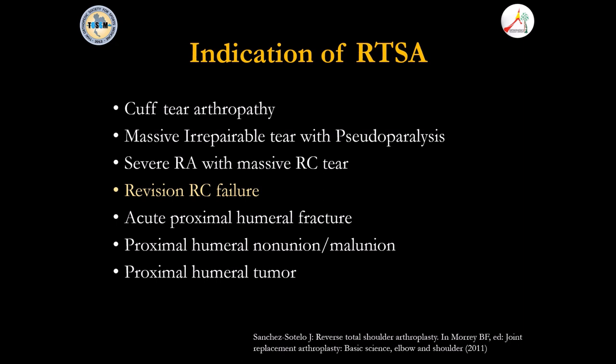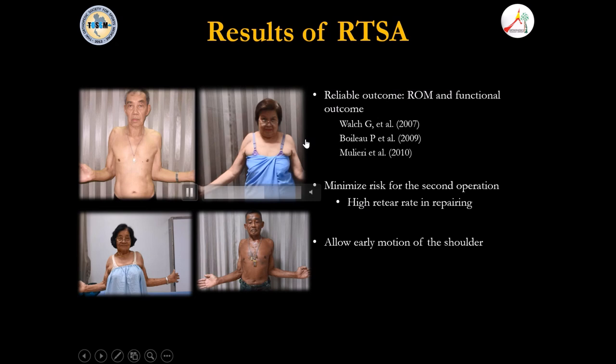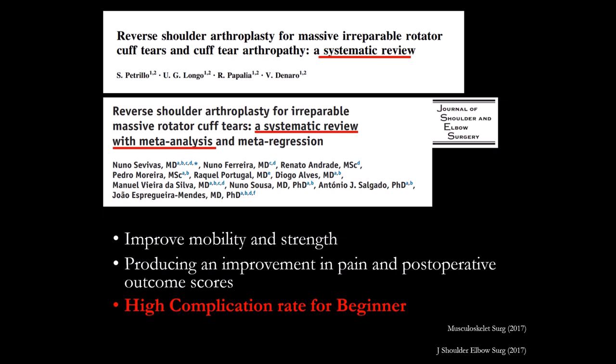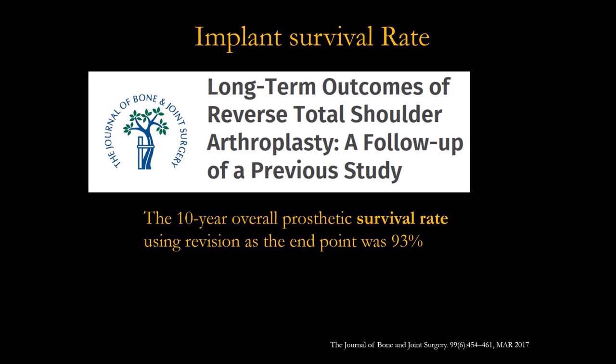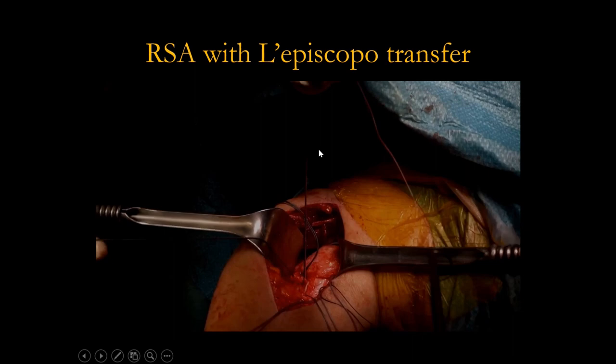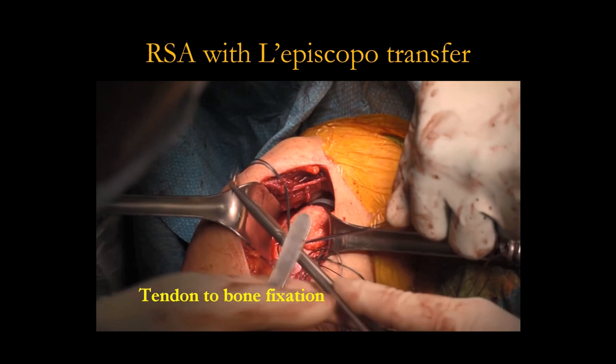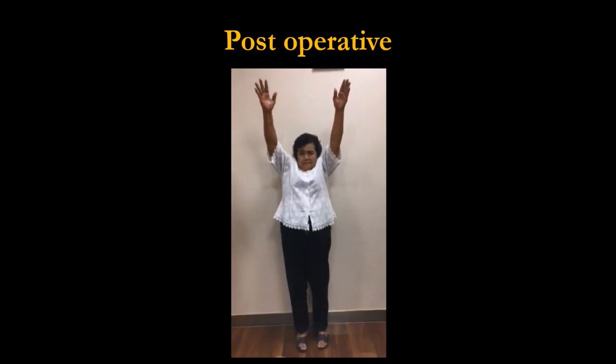Reverse shoulder arthroplasty is a very good option for failed rotator cuff repair and yields reliable results in high-volume surgeons — patients recover quickly and function is good. However, it still carries high complication rates in beginners or low-volume surgeons. Long-term outcome is now up to 90%. One patient had a massive rotator cuff tear with no teres minor — we performed reverse arthroplasty combined with latissimus dorsi tendon transfer with good results.